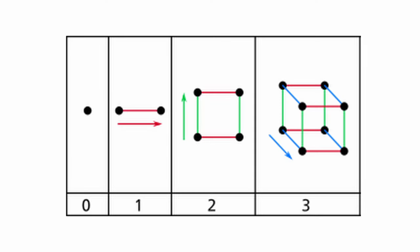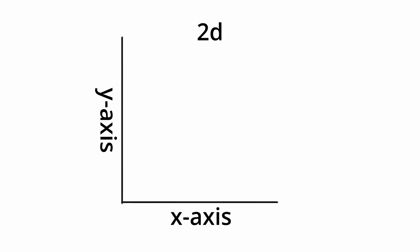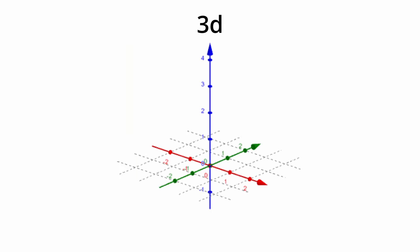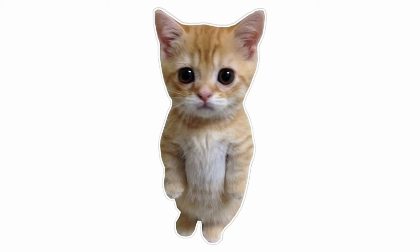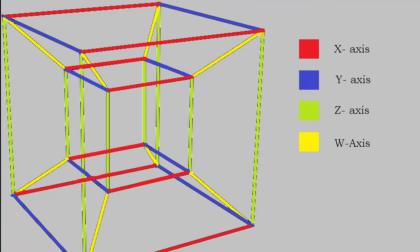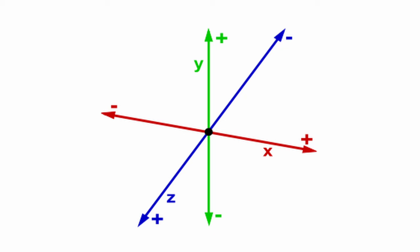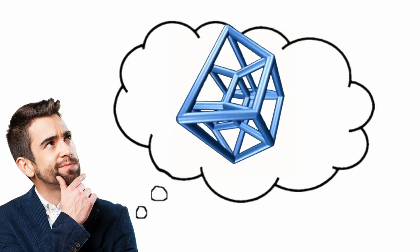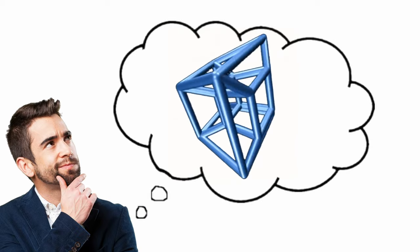Every time there's an increase in dimension, there's also an additional direction added. For the first dimension, you have the x-axis. For the second dimension, you have the y-axis. And for the third dimension, you have the z-axis. So for the fourth dimension, you'll also need an additional direction which is perpendicular to every other direction that's been introduced. But you can see from this graph that there's not really a line that meets these conditions. So for us beings in a three-dimensional world, it's actually impossible for us to comprehend how a four-dimensional world will look like.